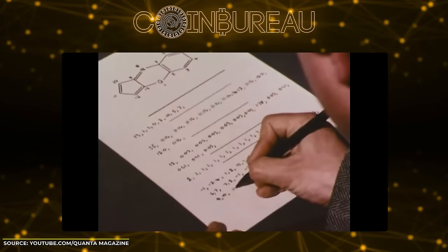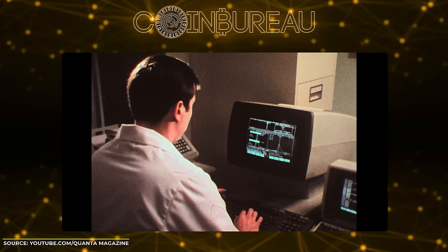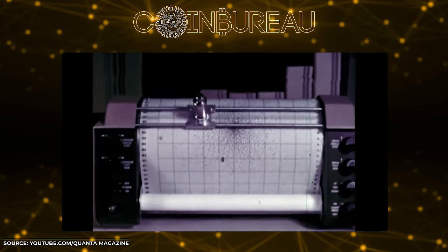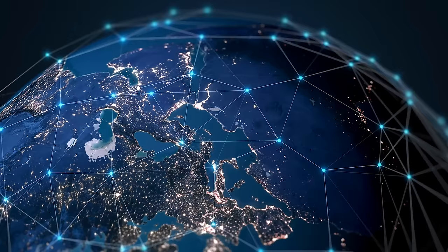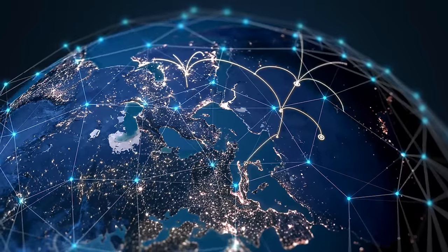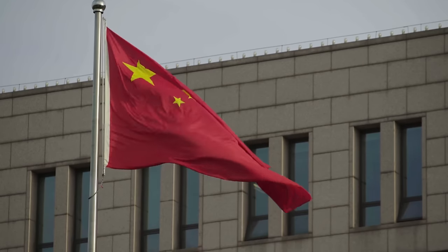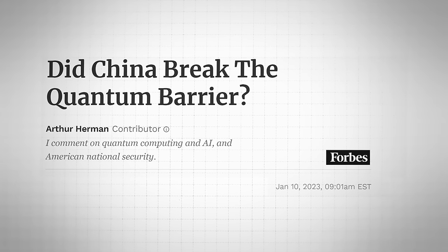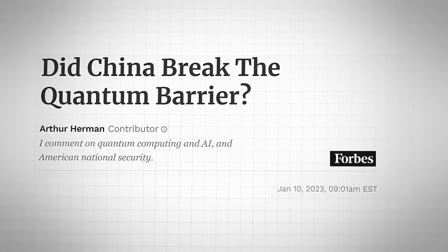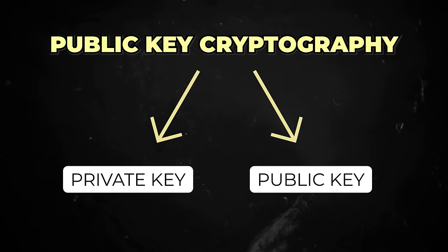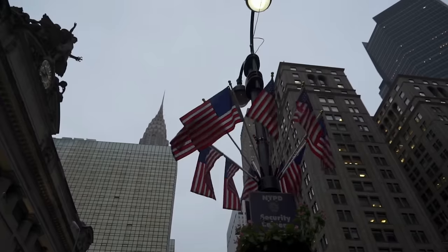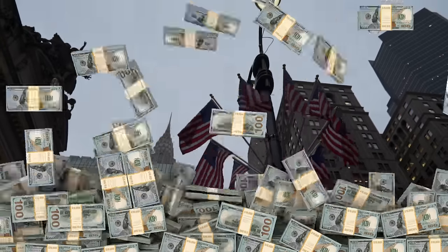Quantum computers have been around for years, and the post-quantum cryptography many of these entities are implementing has apparently been around since the 1980s. The answer is obvious when you zoom out and look at quantum computing through a global lens. In short, the US and its allies have been lagging in quantum computing for over a decade. And can you guess who's been advancing? That's right — China and its allies. In January last year, China reportedly managed to break classical encryption using its quantum computers. This seems to have been the catalyst for the sudden surge in quantum computing interest from the US and its allies.